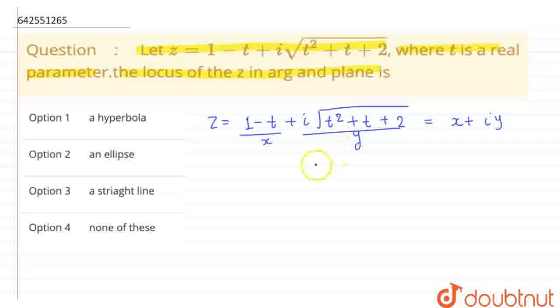So, let's compare the values. I can write here x equals 1 minus t and what is y? y equals square root of t squared plus t plus 2, right students?